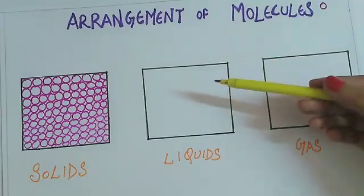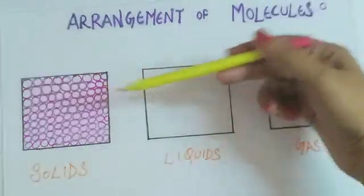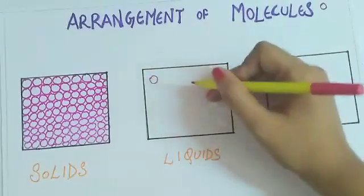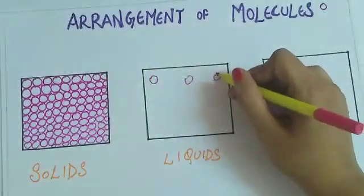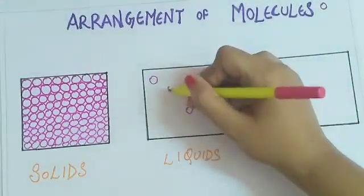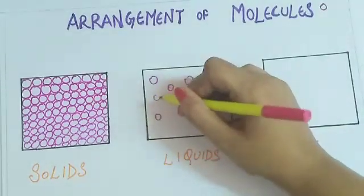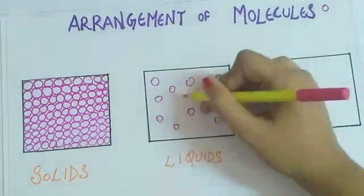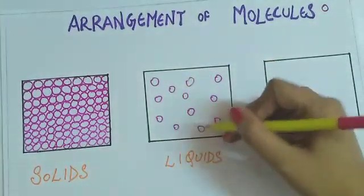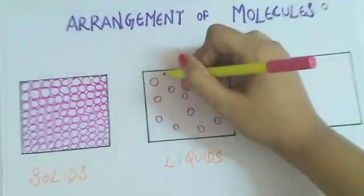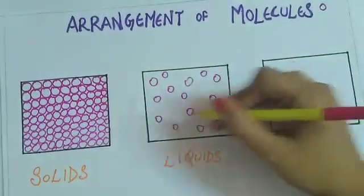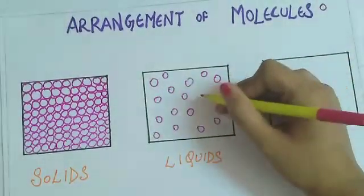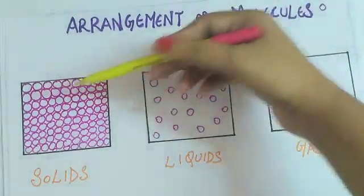Now if we talk about liquids in comparison to solids, the liquids have intermolecular spaces. And the molecules are a little bit far apart from each other so that they can flow easily. They do not have fixed shape. They take the shape of the container in which they are poured in. So, the arrangement of liquids is like this.